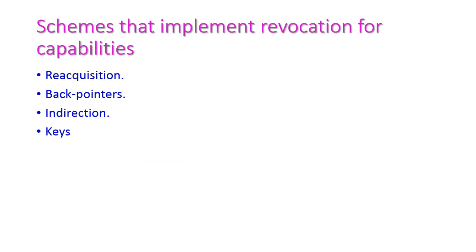Now let us see the schemes that implement revocation of capabilities. There are four different schemes: the first one is reacquisition, the second is back pointers, the third is indirection, and the last is keys. Let us see all those things one by one.